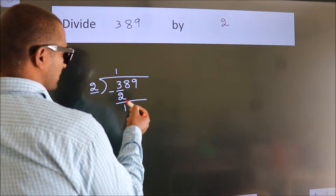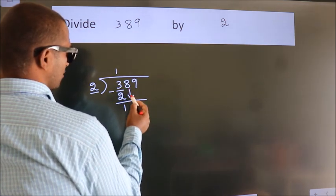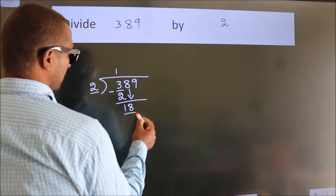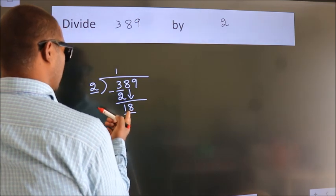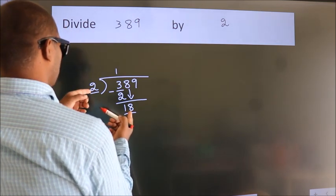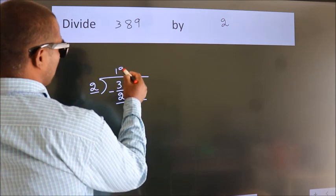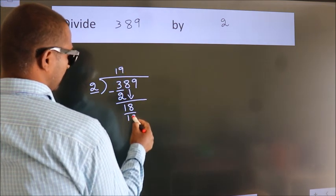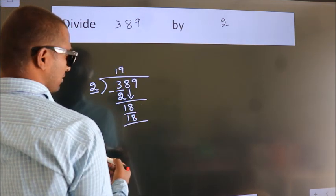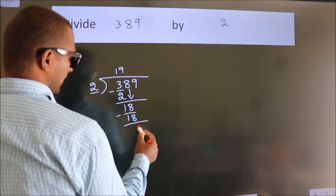After this, bring down the beside number. So, 8 down. So, 18. When do we get 18? In 2 table, 2 9s 18. Now, we subtract. We get 0.